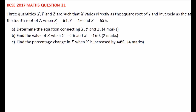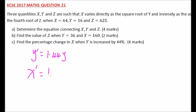Now for the next part of the question: find the percentage change in x when y is increased by 44%. Here we can say, if y is increased by 44%, what it means is our new y, that is y prime, is equal to 1.44 times the old y. And therefore our new x, which is x prime, is equal to k times the square root of our new y divided by the fourth root of z.